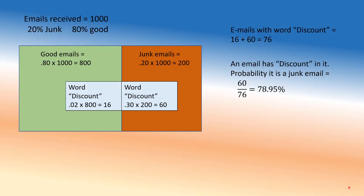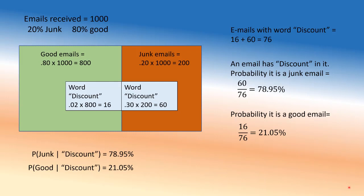Similarly, if an email has the word 'discount,' the probability it is NOT junk is about 21%, which is 100 minus 79%. So the prior probability of being a junk email was 20%, but given the word 'discount' is in there, it has gone up to 79% — that's the revised probability. And the probability that any email will have 'discount' in it is 76 out of 1,000, which makes it 7.6%. Problem done.